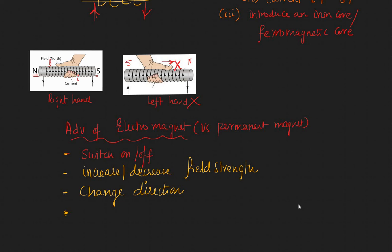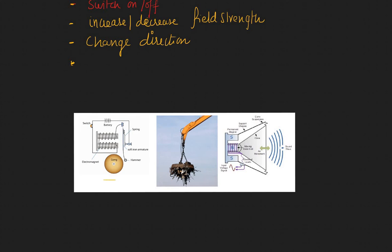Here are some uses of electromagnets. They are very handy in electric bells. When you press the switch, the electromagnet is activated and it pulls the lever towards it. This causes the circuit to break open — suddenly there is no current and hence no magnetic field — and the lever goes back. As this movement happens repeatedly, the hammer hits the gong and you get a sound. A bell is a good example of an electromagnet.